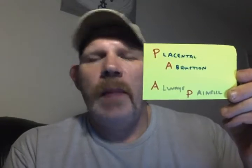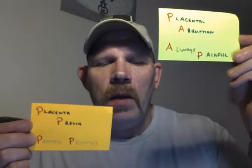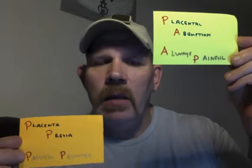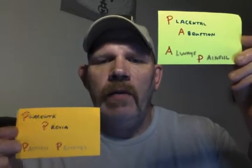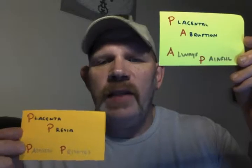This condition — abruption — in all the exam questions will be described with a pain level that's significant, severe, high grade, above five on the pain scale, some dramatic difference. And that's how you tell the difference between these two. While previa may be described as painless, the abruption will always be very, very painful. And even if they give you a previa and say she's having some pain, it will always be a much lower grade pain than the abruption.